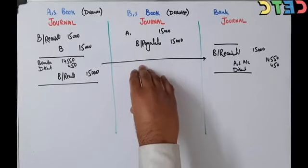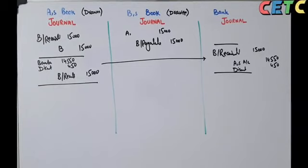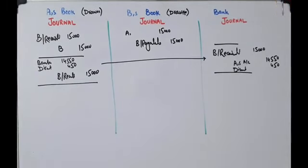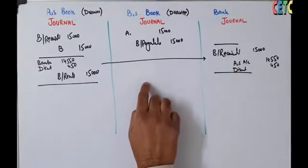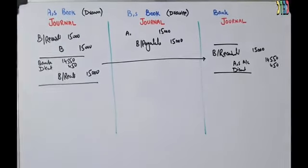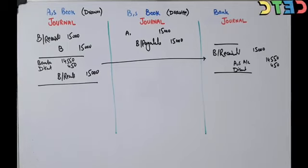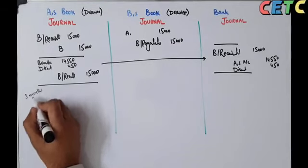On maturity — यानि जब maturity date आई — bank गया B के पास, B ने payment नहीं की, bill dishonor हो गया। Bank ने ₹30 noting charges pay की। यह entry तीनों parties से related है — three months after bill draw होने के बाद pass होगी।